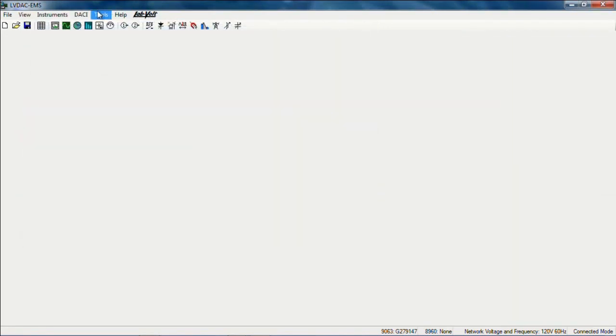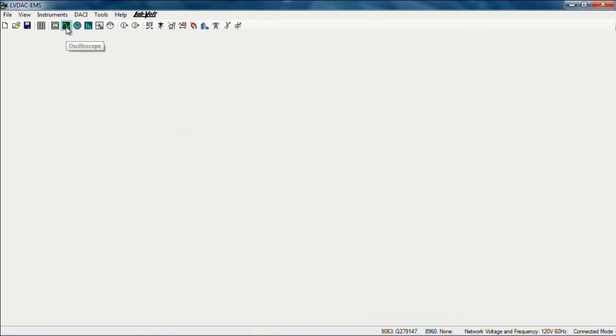I can also see the values on the oscilloscope, phasor analyzer or harmonic analyzer. But in this case it's not very useful because we are all working in DC values.